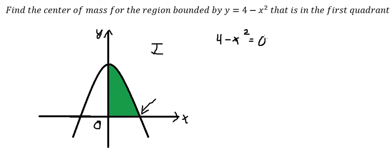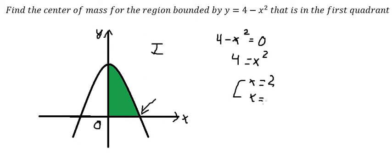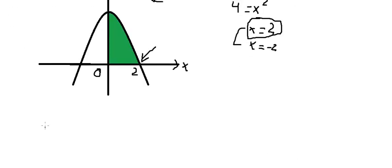We set 4 minus x squared equal to zero, so we move x squared to the right. Taking the square root of both sides, we get x equals 2 and x equals negative 2. Since we are in the first quadrant, we select the positive value, so x equals 2.